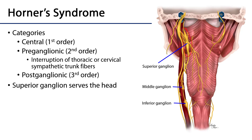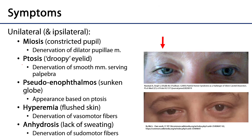Whether it's central, preganglionic, or postganglionic, a wide range of symptoms may be possible — some in the case of central affecting the entire body, some in the case of preganglionic or even postganglionic affecting either the side of the head in which there's the lesion or particular parts of the head, as we'll see.